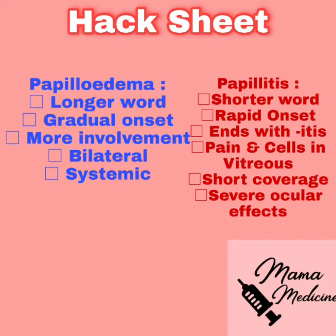Here is my trick for remembering which symptoms belong to which condition. It may seem a little simple, but it works. Papilledema is a longer word, so it has more involvement — bilateral involvement of your optic discs and systemic symptoms and signs. The gradual, slow onset corresponds to this longer, more extensive word.